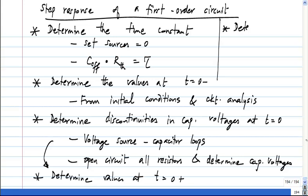You also determine the final value by—again, you open circuit all capacitors because we are applying piecewise constant inputs. We expect voltages across capacitors also to be piecewise constant.